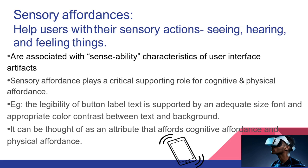The third kind of affordance is Sensory Affordance, which helps users with their sensory actions such as seeing, hearing, and feeling. It plays a crucial role in supporting cognitive and physical affordance. For example, when creating a button, we need to consider proper font size, text, and background color so that the font size, color, and style combination helps the user see the action clearly — it should be pleasing to the eye.